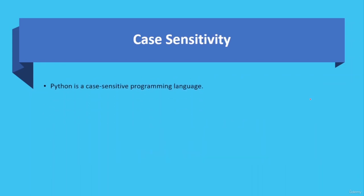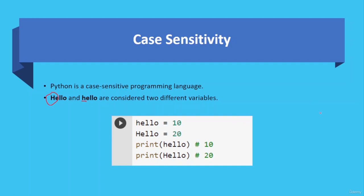Python is a case-sensitive programming language. For example, 'hello' and 'Hello' are considered two different variables — in the first, H is capital, and in the second it's lowercase. Here you can see the example: 'hello = 10' with all small letters and 'Hello = 20' with H capital. If you output the result, you will get the corresponding value assigned to each variable.